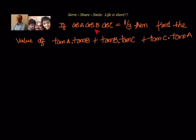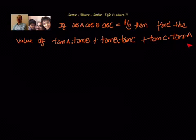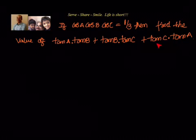If cos A cos B cos C equals 1 by 3, then find the value of tan A tan B plus tan B tan C plus tan C tan A. We have been given that cos A cos B cos C equals 1 by 3, and we have to find the value of tan A tan B plus tan B tan C plus tan C tan A.